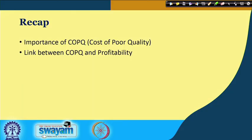Here the customer is the focus. In the recap of the last couple of lectures, specifically the previous one, we talked about COPQ — cost of poor quality — broadly divided into cost of conformance and cost of non-conformance, and there is a direct link between COPQ and profitability. Customer focus and involvement of people as part of TQM is extremely important to deliver quality that meets customer requirements.